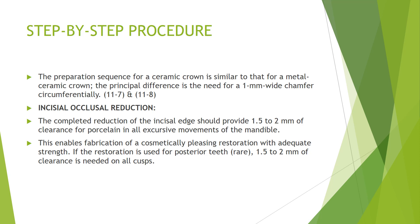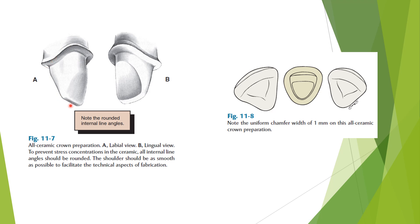If the restoration is used for posterior teeth, which is rare, 2 mm clearance should be given. All line angles are rounded, and a 1 mm wide shoulder is prepared. The preparation is done anatomically — you can see the labial view and lingual view. The margin is 1 mm and must be equally distributed all around.